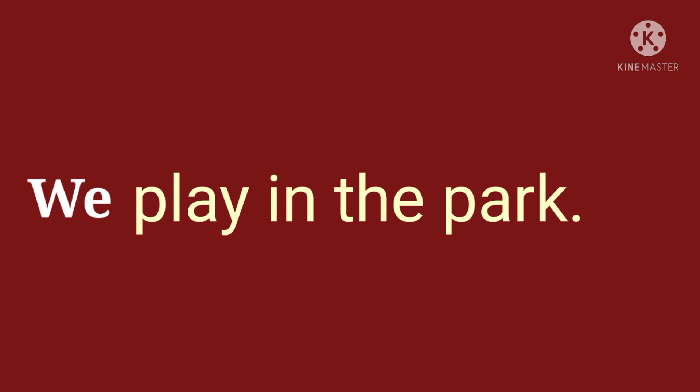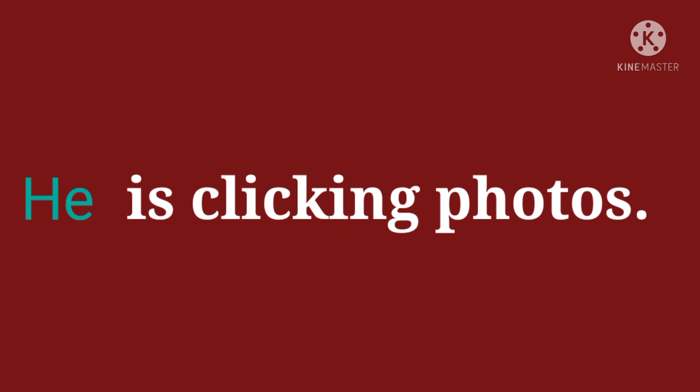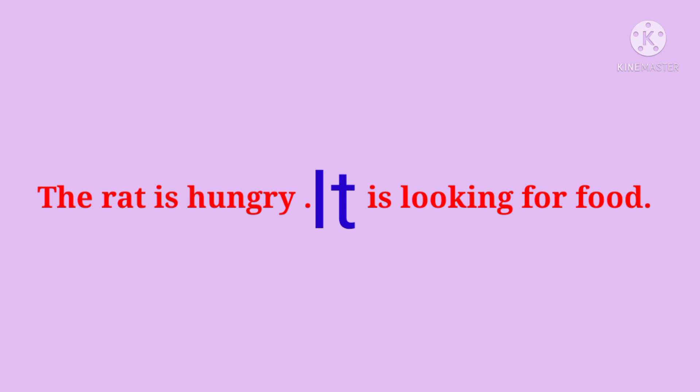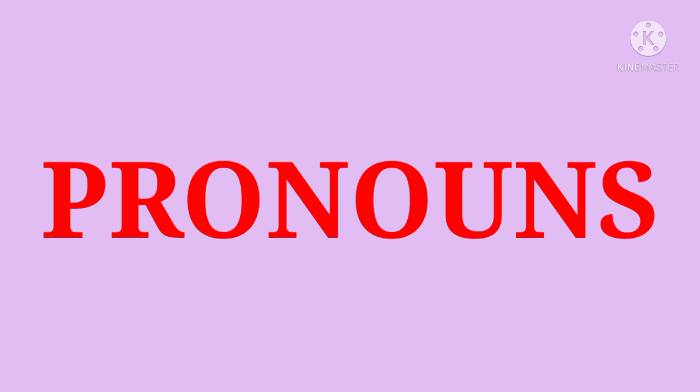I hope you have understood about the pronouns. Come on, children — let's try to find out the pronoun from the sentence. We play in the park. Here, the word 'we' is a pronoun. The next sentence is: He is clicking photos. Here, the word 'he' is a pronoun. I am coming for the party. Here, the word 'I' is a pronoun. The rat is hungry. It is looking for food. So children, pronouns are words that can replace nouns.